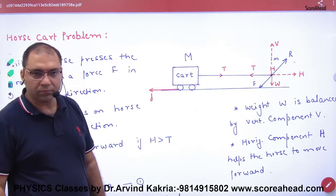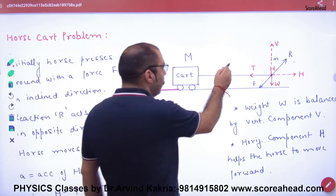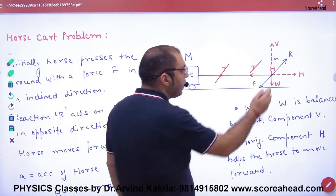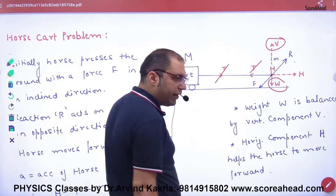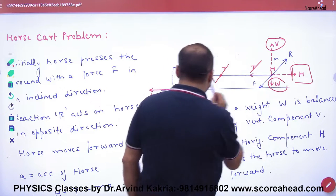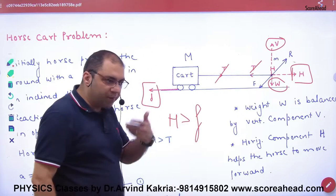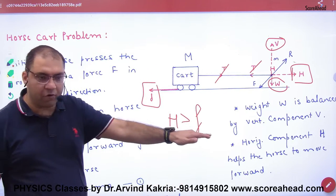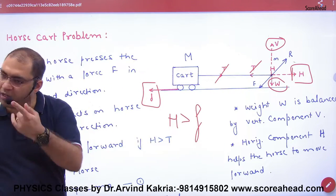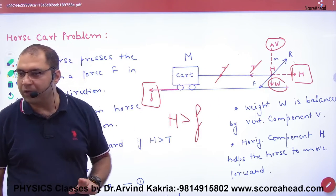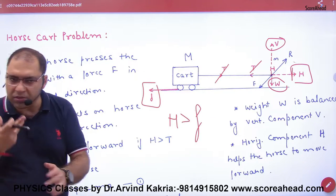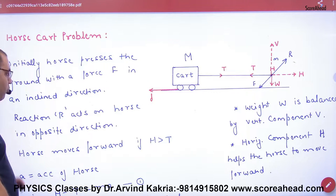When the horse is running, the vertical component will cancel with weight. Then the horizontal force helps move forward. Mathematically, we can prove this.